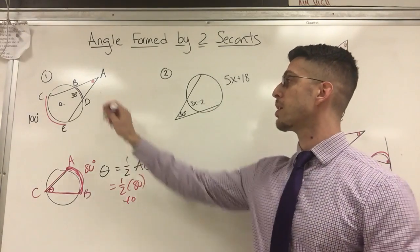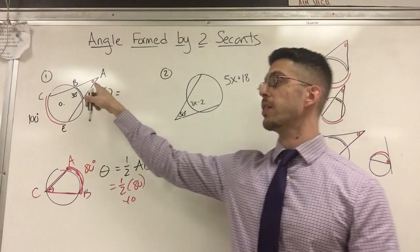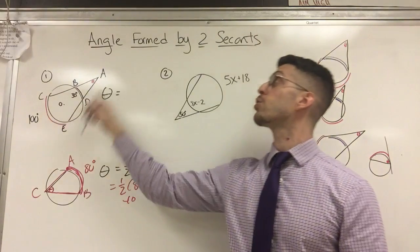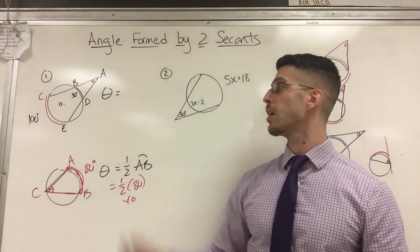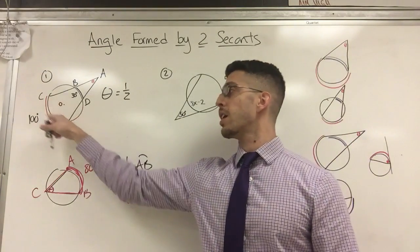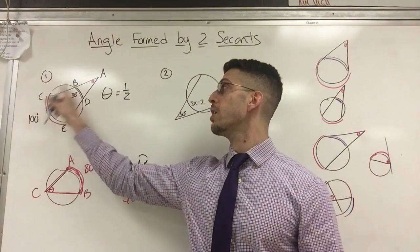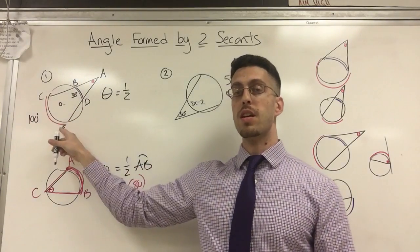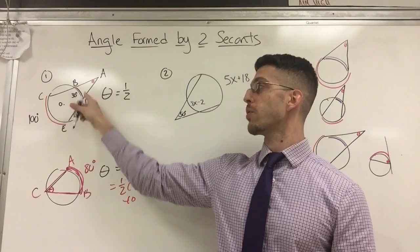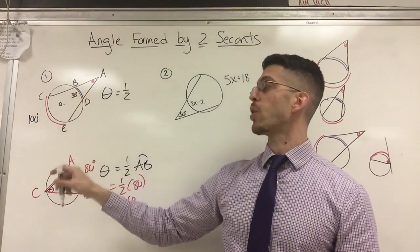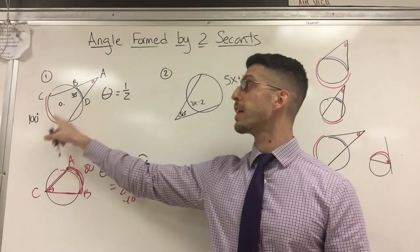So here's my formula. The angle theta here, which is outside, exterior angle theta formed by two secants, is equal to one half the intercepted arcs. So here, if I follow angle A all the way out, it reaches this arc CE. If I follow it just to when it first hits the circle, that's arc BD. So that's big arc, that's little arc.